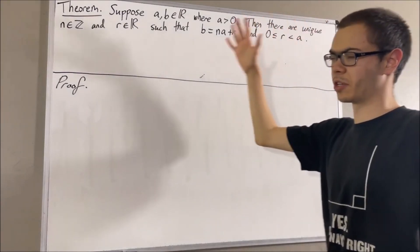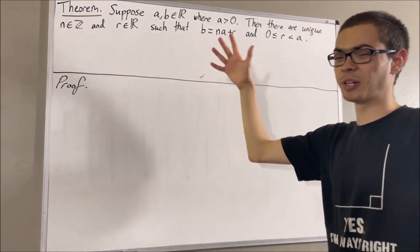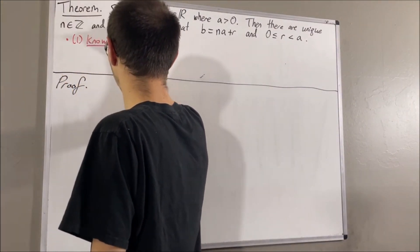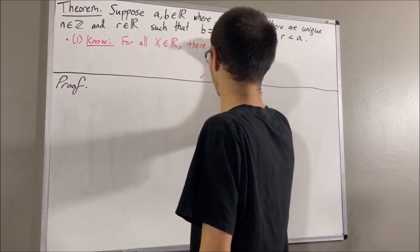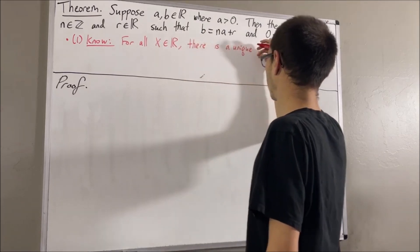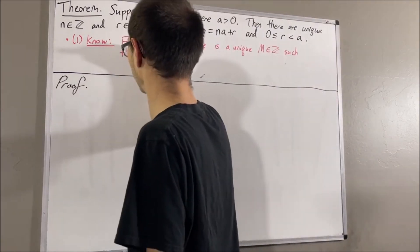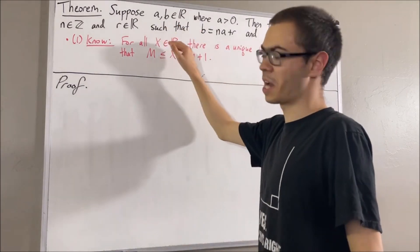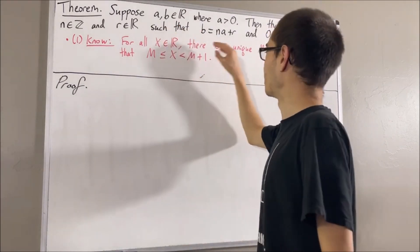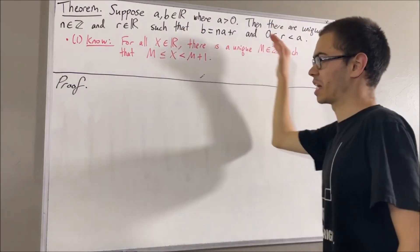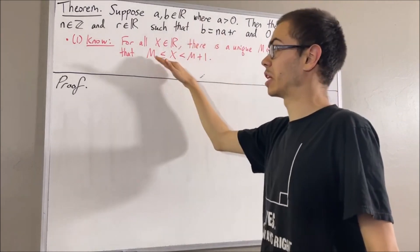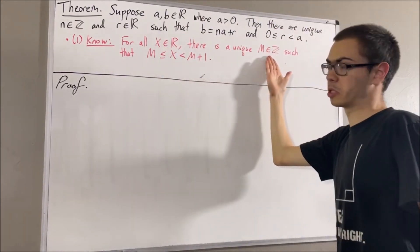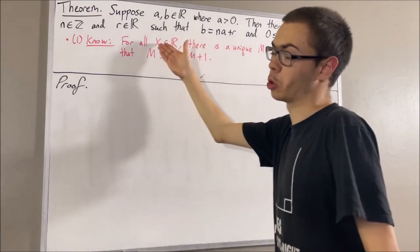Now in proving this theorem, we are going to use the following preliminary result. For every real number x, there is a unique integer m such that m is less than or equal to x, which is less than m plus 1. m is sometimes called the floor of x.